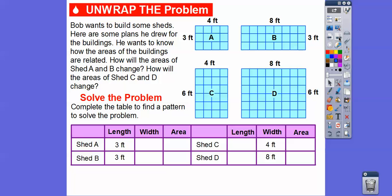Here's our table. We're going to fill in the lengths and the widths. For Shed A and Shed B, the length is 3 for both. The width of Shed A is 4, and the width of Shed B is 8. The area is length times width, so Shed A is 3 times 4, which is 12 feet squared. And Shed B is 3 times 8, which is 24 feet squared.